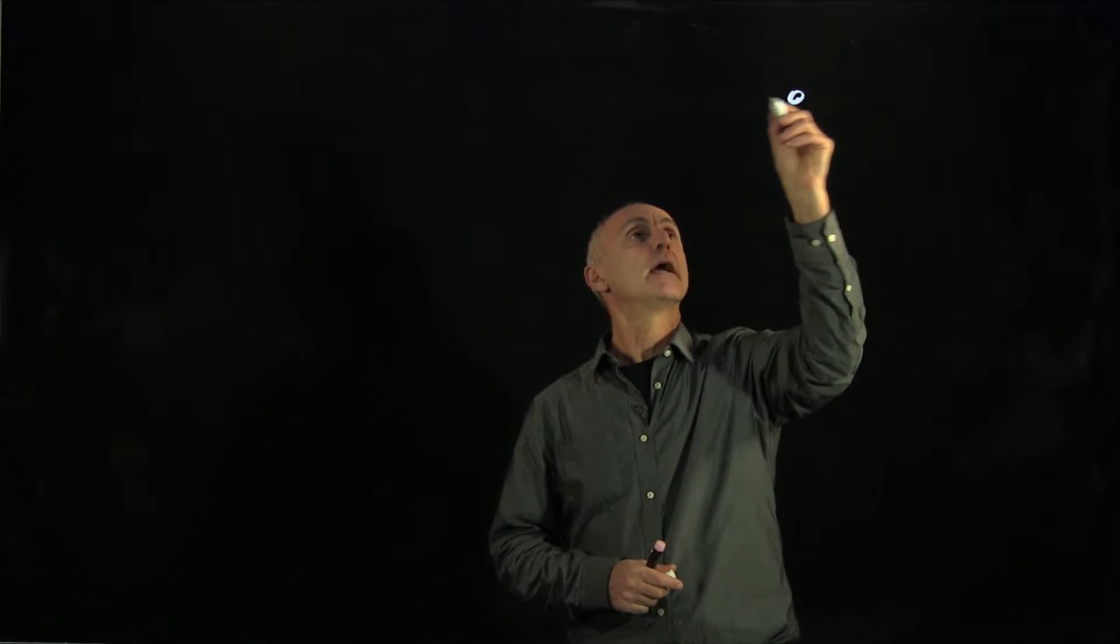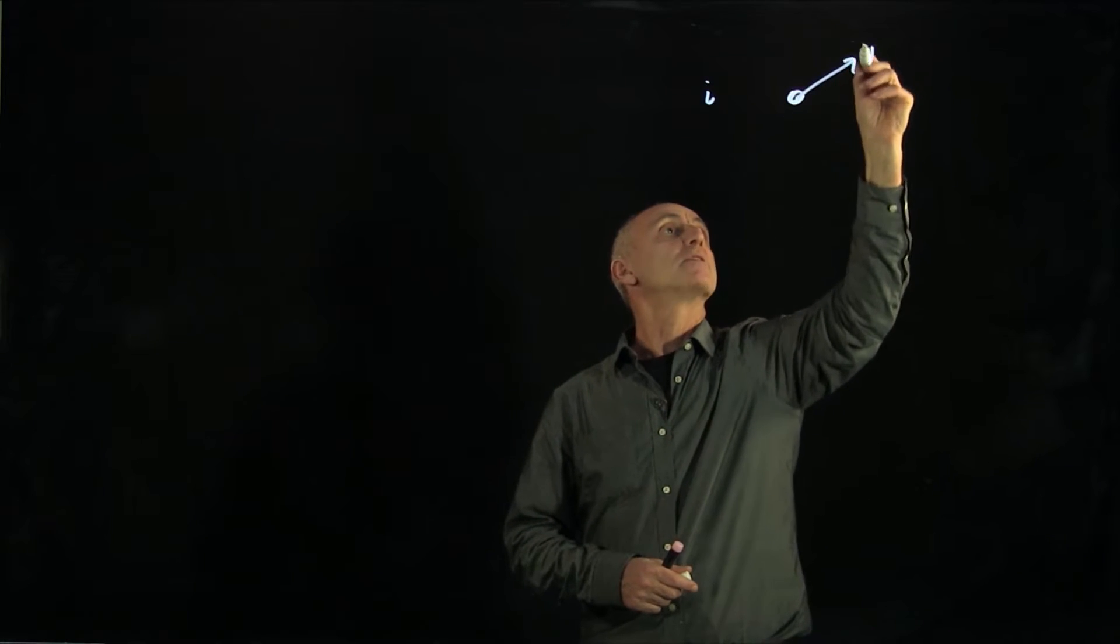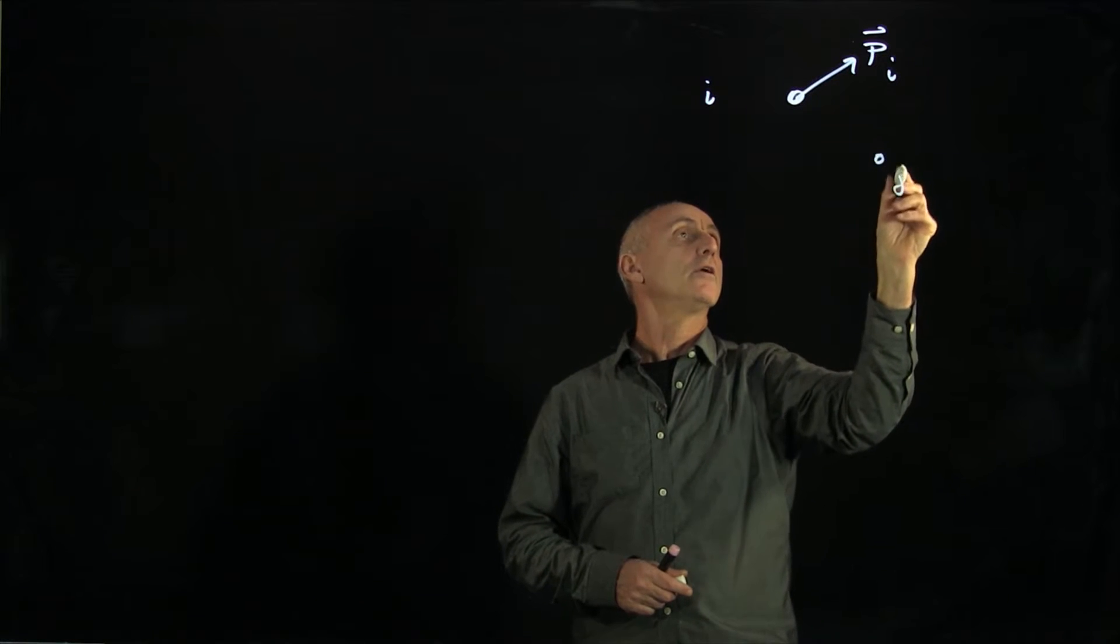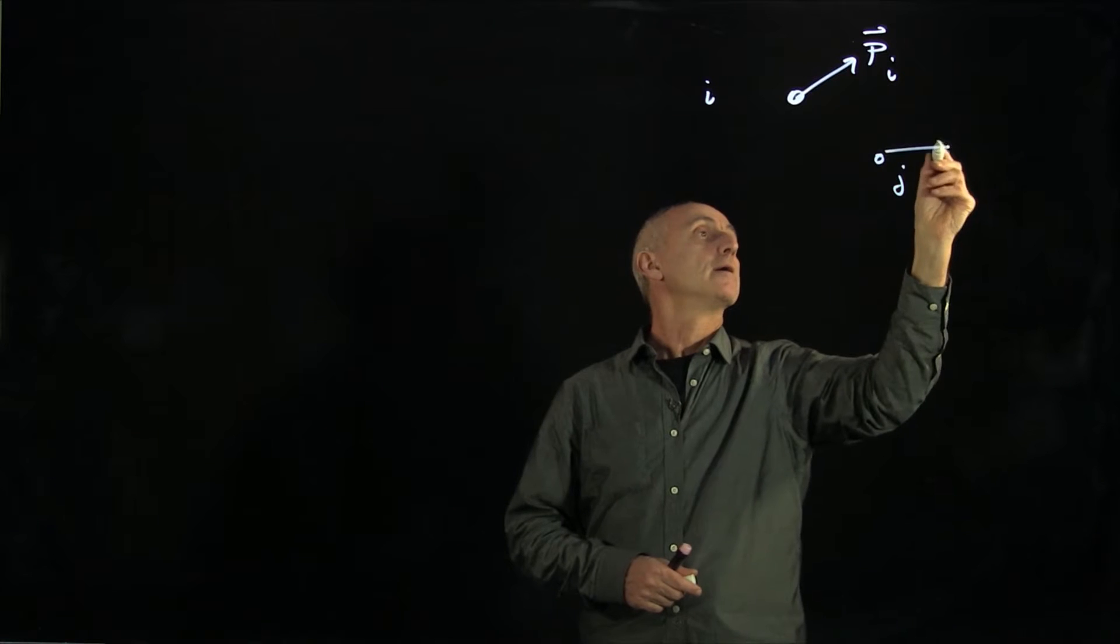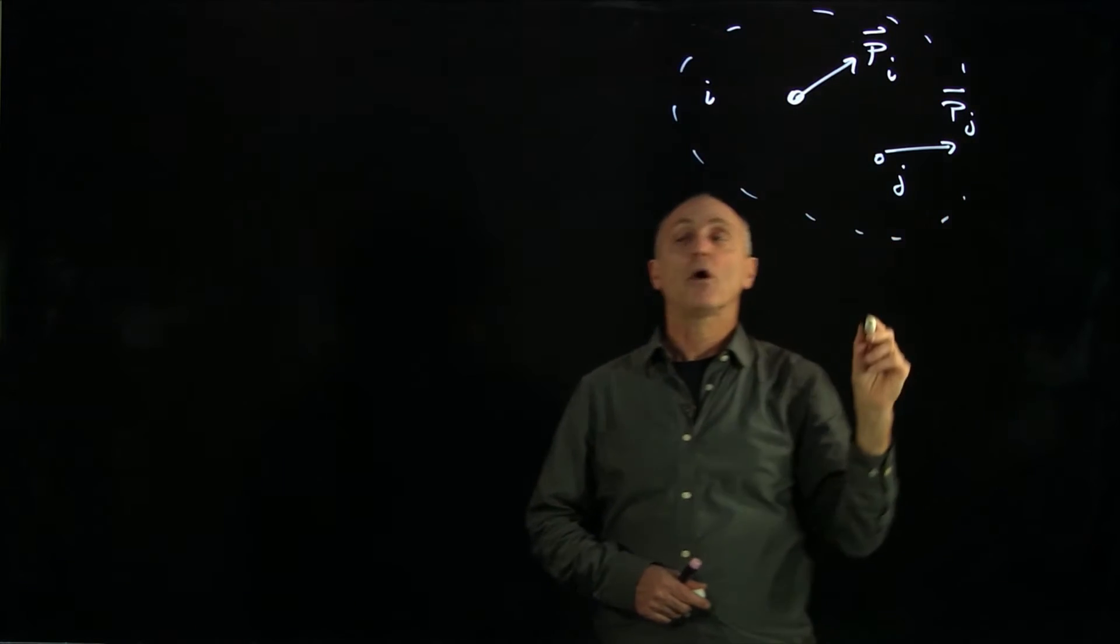So let's begin by indicating some i-th particle with momentum pi and some j-th particle over here with momentum pj. And this is a big system of n particles.